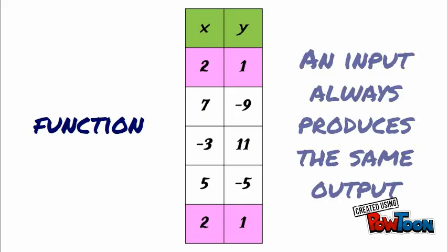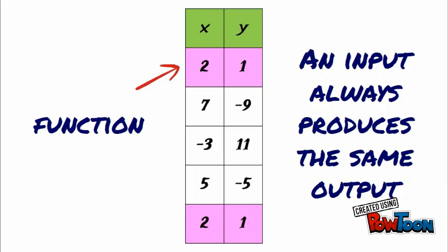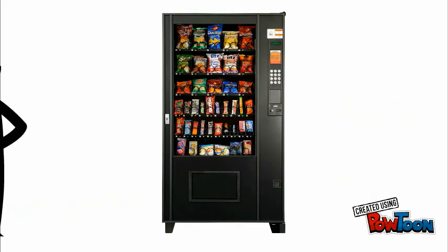What we see here is an example of a function. A function is when an input always produces the same output. We input 2 earlier and got 1 as an output, and we input 2 again and got 1 as the output again.